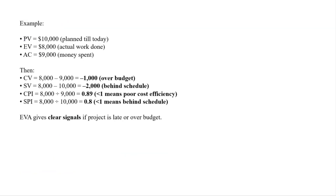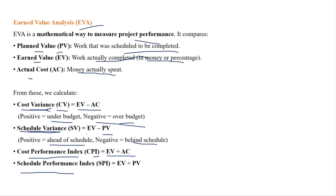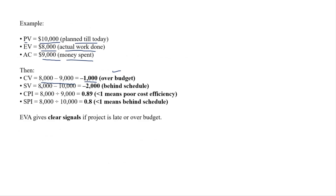Example: PV = $10,000 (planned till today), EV = $8,000 (work actually finished), AC = $9,000 (money spent). CV = EV minus AC = 8000 minus 9000 = minus 1000. Negative means over budget. SV = EV minus PV = 8000 minus 10000 = minus 2000. Negative means behind schedule — we had 10 tasks to complete but are falling behind.